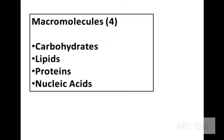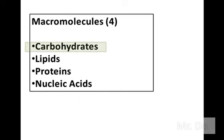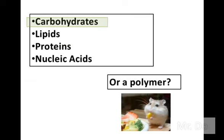So there are four macromolecules. These are the basic building blocks of all cells — in other words, pretty much everything in your body. Out of these four macromolecules, there's carbohydrate. And all of these macromolecules come in two versions: the monomer version and the polymer version.